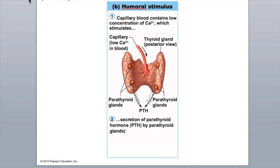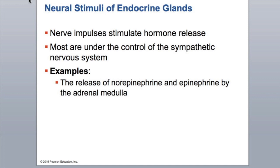Looking at the picture, you can see capillary blood calcium concentration stimulates the parathyroid to decrease calcium concentration within the blood. Your third stimulus is the neural stimulus, where a nerve impulse stimulates hormone release. This is where norepinephrine and epinephrine come into play — what's happening in your adrenals with your stress hormones. Most of these are under your sympathetic nervous system, the nervous system that you have no control over.